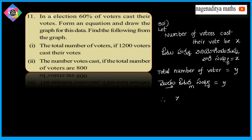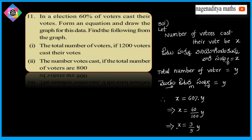So, this implies x is equal to 60 percent of y. This implies x is equal to 60 percent by 100, so 3 by 5 into y.